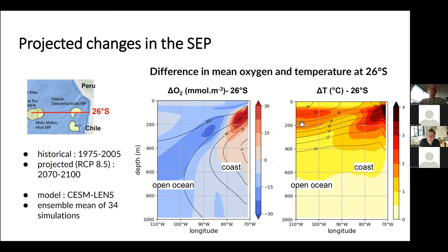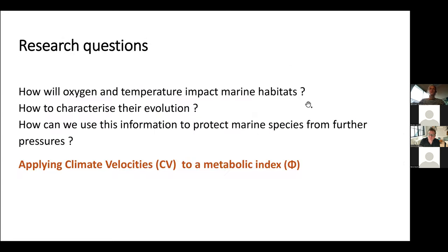In this context, our questions are: how will oxygen and temperature impact marine habitat, how to characterize their evolution, and how can we use this information to protect marine species from further pressures? To try answering that question, we are going to apply climate velocities to a metabolic index.